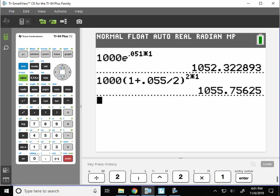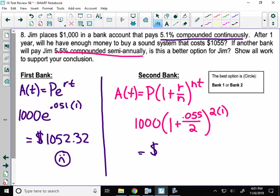$1,055.76. There we go. That is pretty much exactly what Jim wanted, which is enough money. So the bank you should go with is bank two. All right, last one for this video.